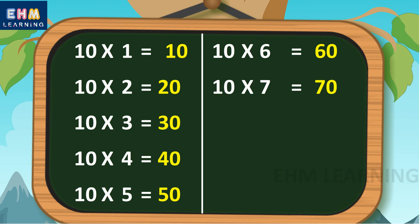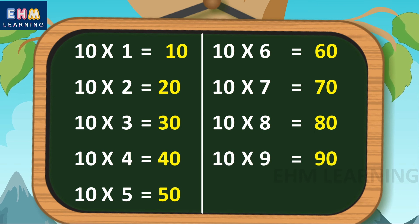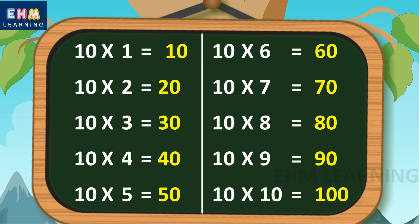10 7s are 70, 10 8s are 80, 10 9s are 90, 10 10s are 100.